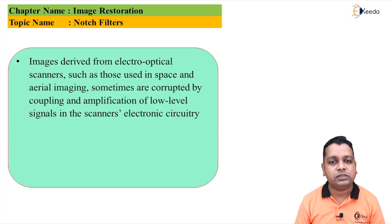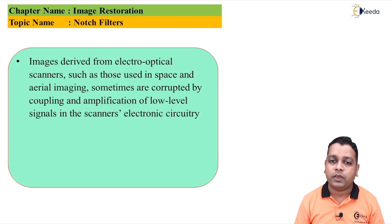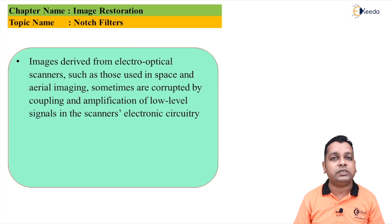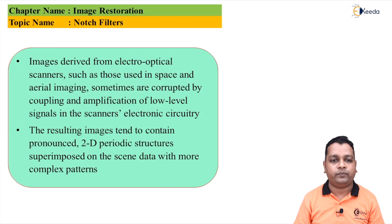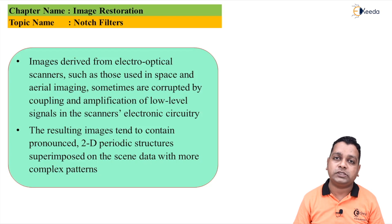Images derived by electro-optical scanners used in aerial imaging are sometimes corrupted by coupling and amplification of low-level signals in the scanner's electronic circuitry. The resulting images tend to contain pronounced two-dimensional periodic structures superimposed on the scene data with more complex patterns.